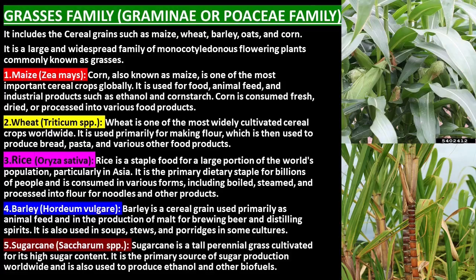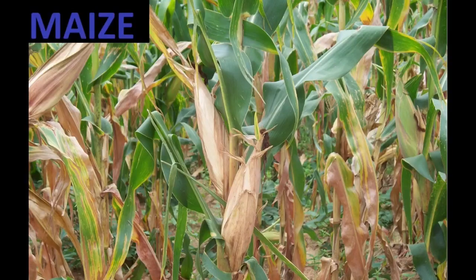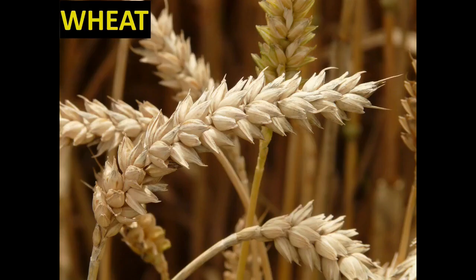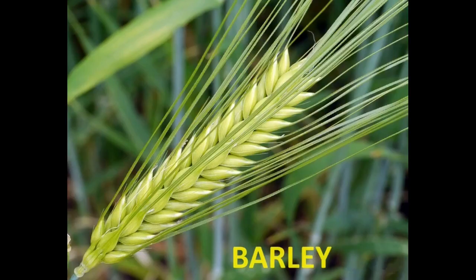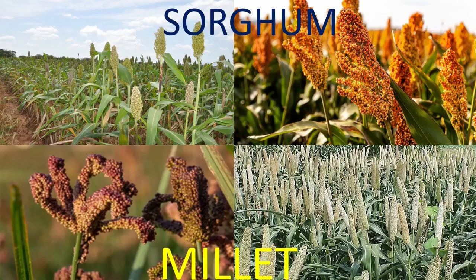The grasses family, Gramineae or Poaceae family, includes the cereal grains such as maize, wheat, barley, oats, and corn.